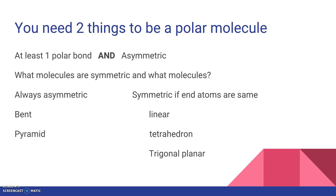Some shapes are never symmetric — they're always asymmetric. Bent molecules are always asymmetric; like water, the top is different than the bottom. Pyramidal shapes are also the same way — the tops are different than the bottoms. Other shapes can be symmetric, but only if the end atoms are the same. If you have a linear molecule and both ends are the same — like CO2 where both ends are oxygen — it is symmetrical. A tetrahedron like CCl4 where all ends are Cl, or a trigonal planar molecule where all ends are the same, is also symmetric.